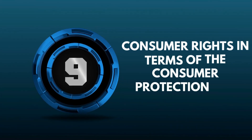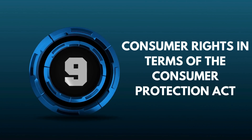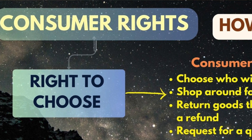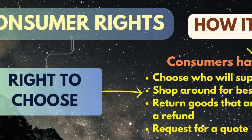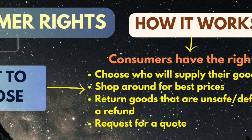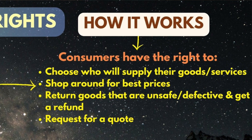We've got nine rights of consumers under the Consumer Protection Act. The first is the right to choose. Customers have the right to choose — you cannot force a customer when they enter your business. It is the right of the customer to choose their supplier, the goods, or the product they want to buy. The second right is the right to privacy and confidentiality.